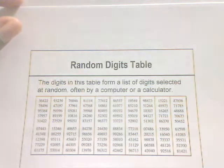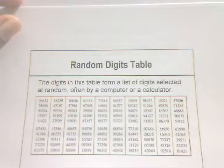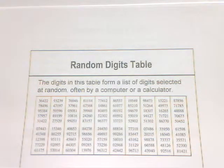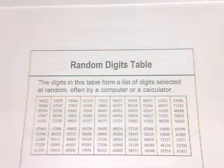Now on this one, you see the random digits table. Here, the digits in this table form a list of digits selected at random, often by a computer or by a calculator. So think of this as just random digits. These are just digits that are randomly selected.